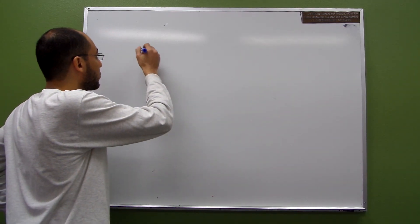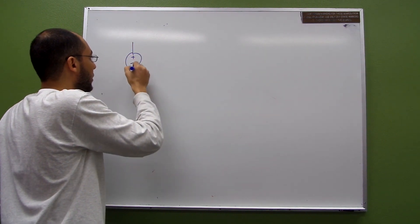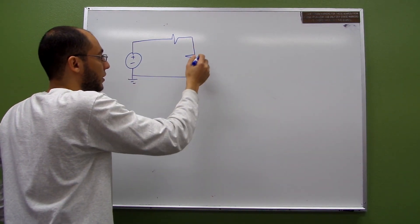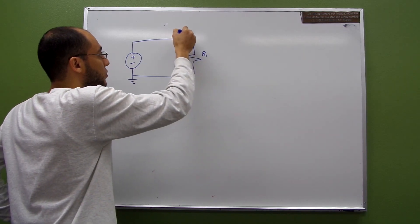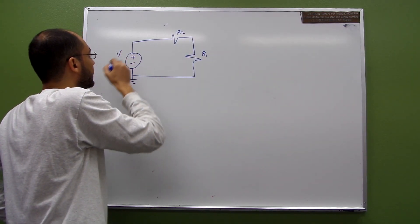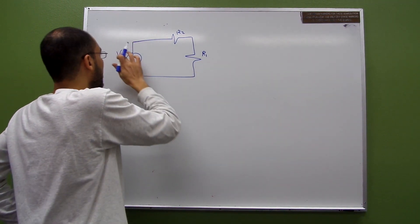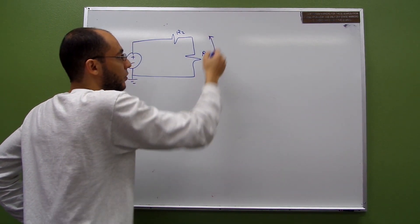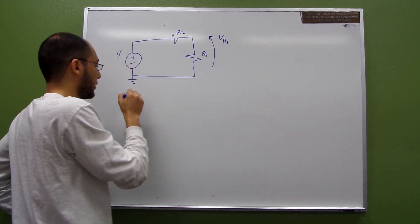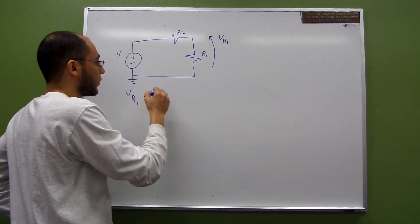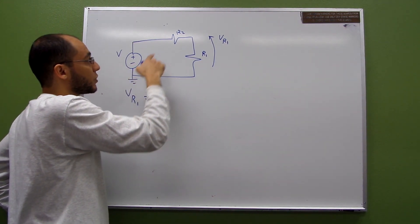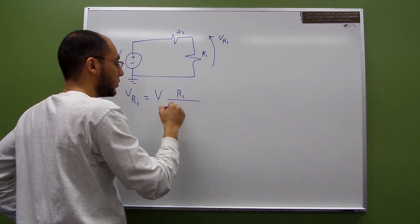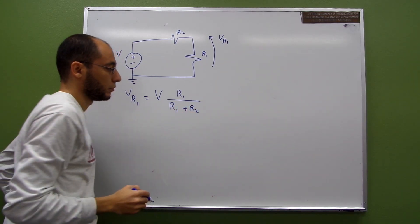So what is the voltage divider rule? If you're given a source Vs, resistor R1 and resistor R2 in series, and you want to find the voltage over R1, then V_R1 equals the voltage of the source multiplied by R1 over R1 plus R2.